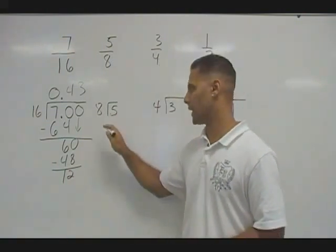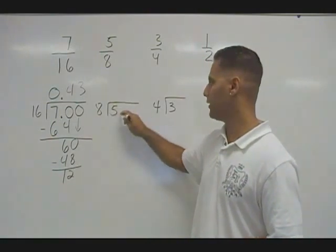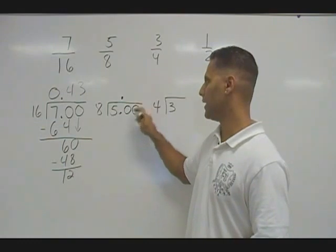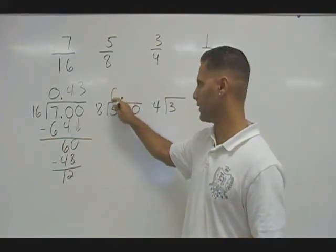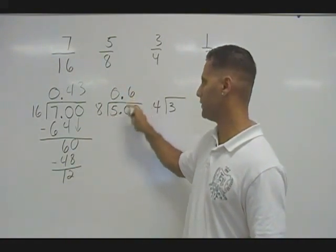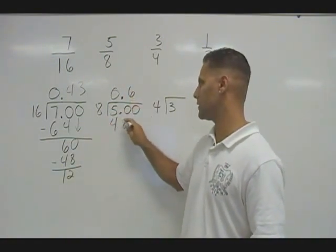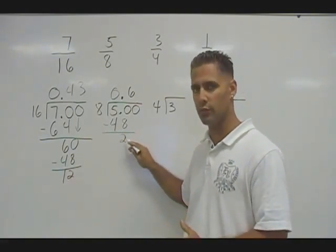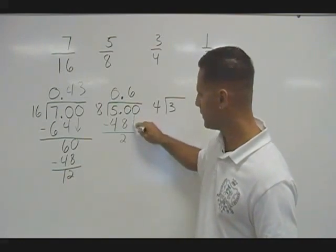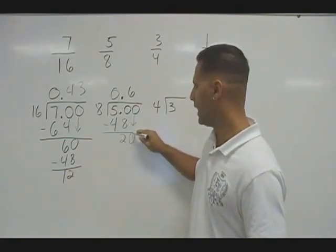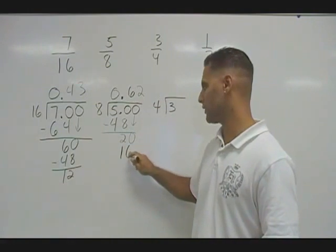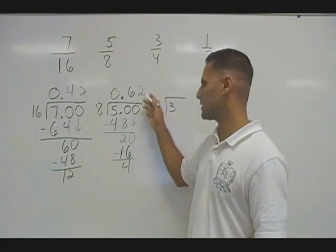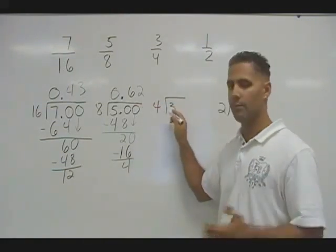So let's move on to five divided by eight. We're going to place a decimal and two zeros after the decimal point. Eight cannot fit into five, so we put a zero for that place. We can fit six groups of eight into fifty, which is forty-eight, leaving two left over. We drop the zero down from the hundredths place, and we can fit two groups of eight into twenty, which is sixteen. We can say that five-eighths is about sixty-two cents.